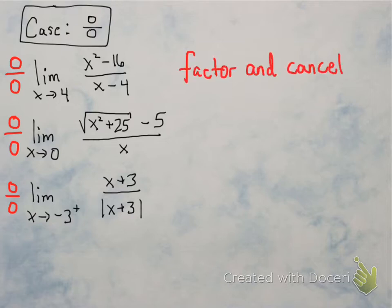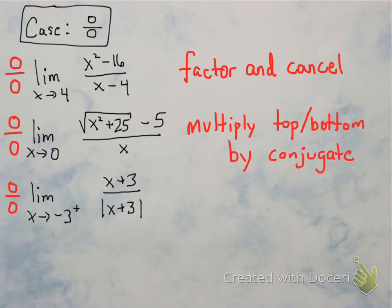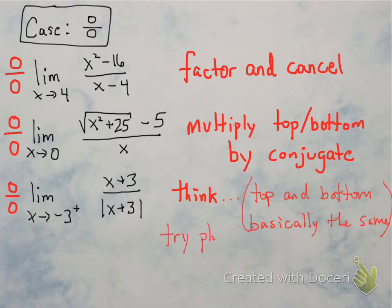In the first example, what you should do is factor and cancel — factor x squared minus 16 and then cancel the x minus 4. In the second one, you see a square root, so the trick is to multiply top and bottom by the conjugate, which would be square root of x squared plus 25 plus 5, not minus 5. In the last one, you see an absolute value, so you need to think — the top and bottom are basically the same except for the absolute value. Try plugging in numbers and see what happens.